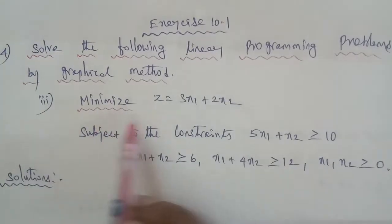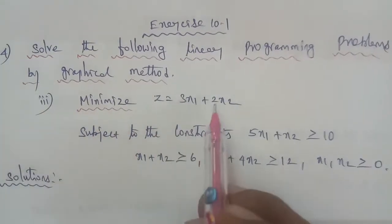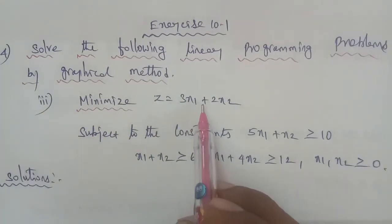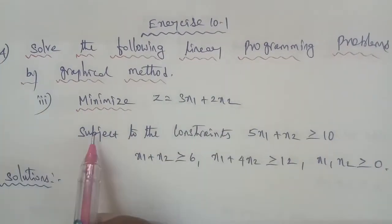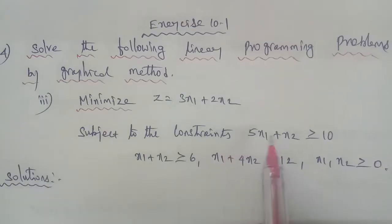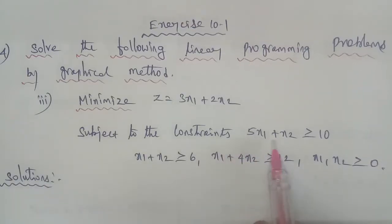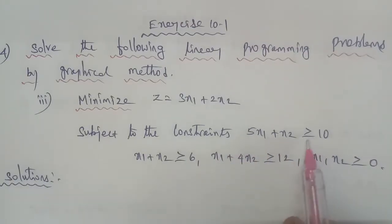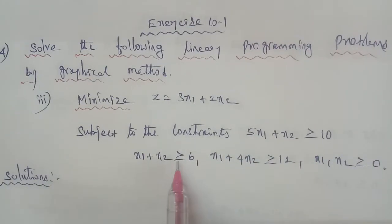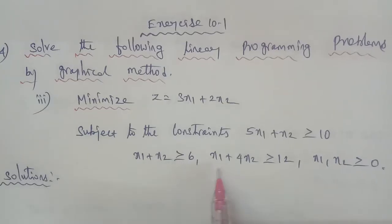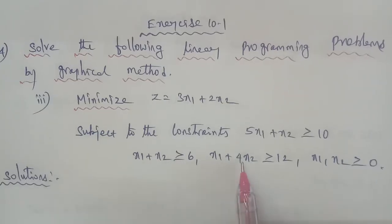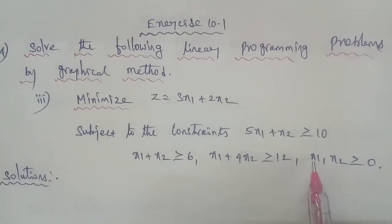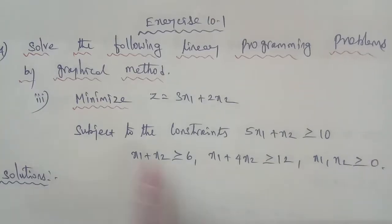4th sub-question 3: Minimize Z is equal to 3x1 plus 2x2, subject to constraints: 5x1 plus x2 greater than or equal to 10, x1 plus x2 greater than or equal to 6, x1 plus 4x2 greater than or equal to 12, and x1, x2 greater than or equal to 0.